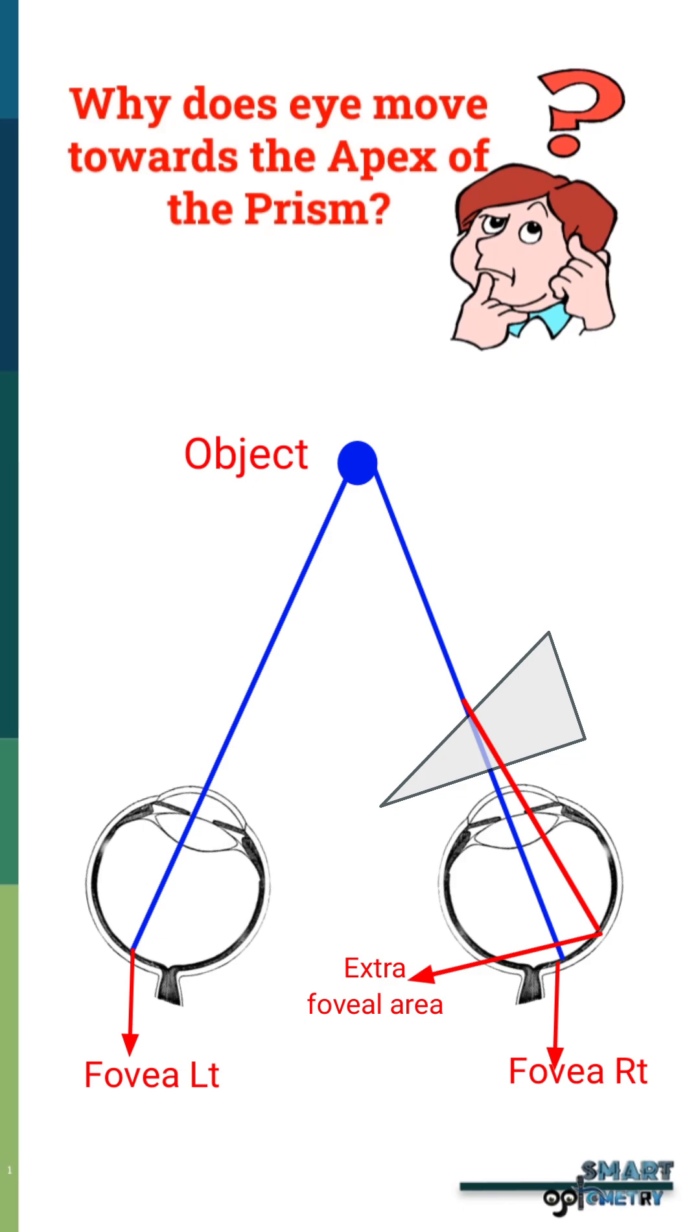When rays shift from fovea to an extrafoveal area, the eye will also move in such a pattern towards the apex of the prism so that the ray can fall in the fovea.